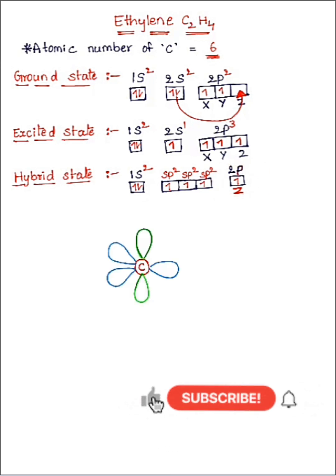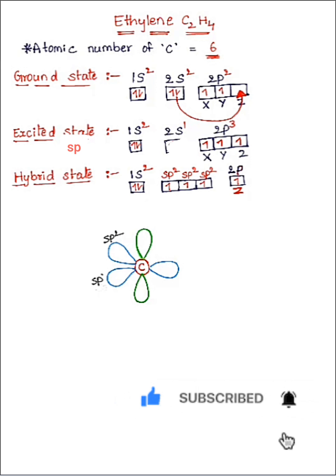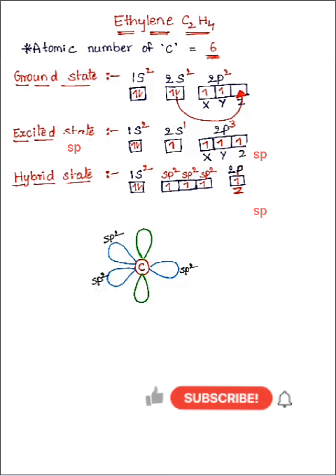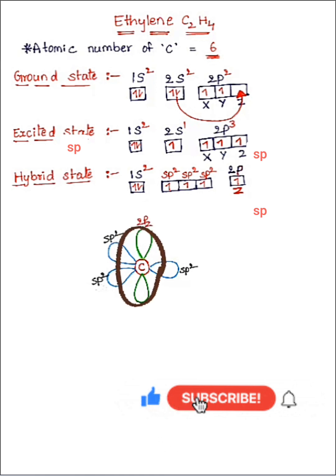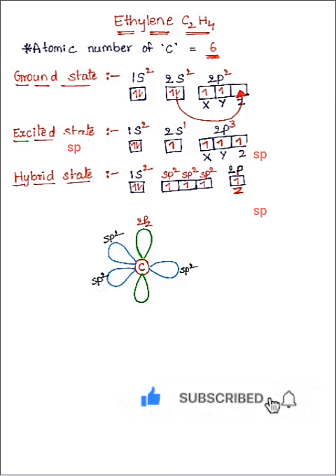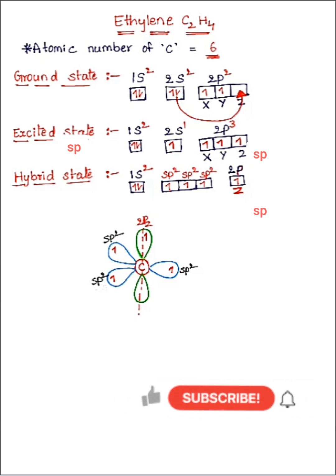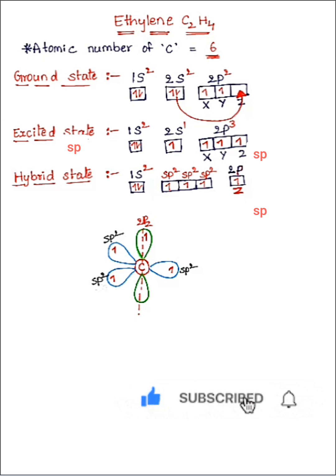The carbon atom in sp2 hybridization has this geometry: three sp2 hybrid orbitals and one 2pz unhybridized orbital, each containing one electron. The bond angle in sp2 hybridization is 120 degrees. Up to here we have seen sp2 hybridization in a single carbon atom only.